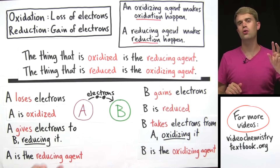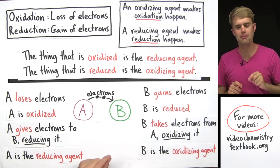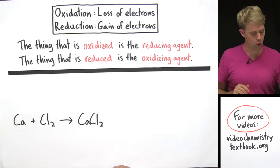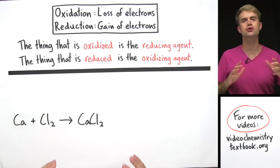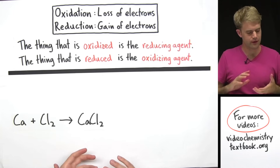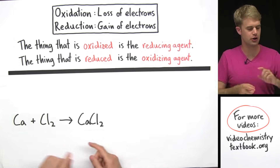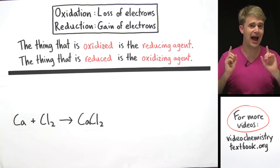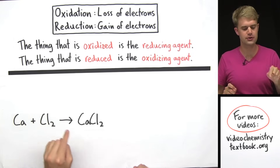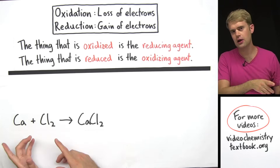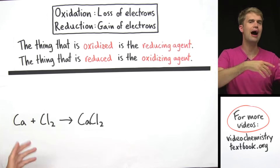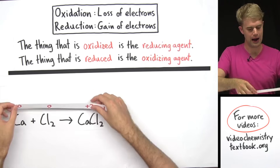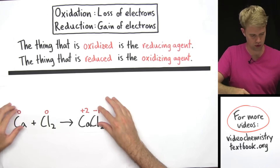Now I want to look at two chemical equations where we'll figure out what elements and compounds are the oxidizing agents and the reducing agents. Here I've got this chemical equation. We want to figure out which of these elements is an oxidizing agent, which is a reducing agent. In order to figure that out, we've got to know how oxidation and reduction are happening — we have to look at how electrons are being transferred. To do that, we've got to look at the oxidation numbers of each one of these elements. I have a whole bunch of videos on how to write oxidation numbers — I'm not going to show you how to do that here.